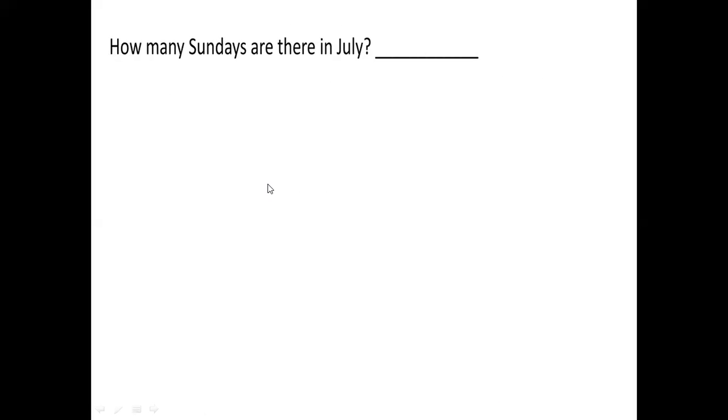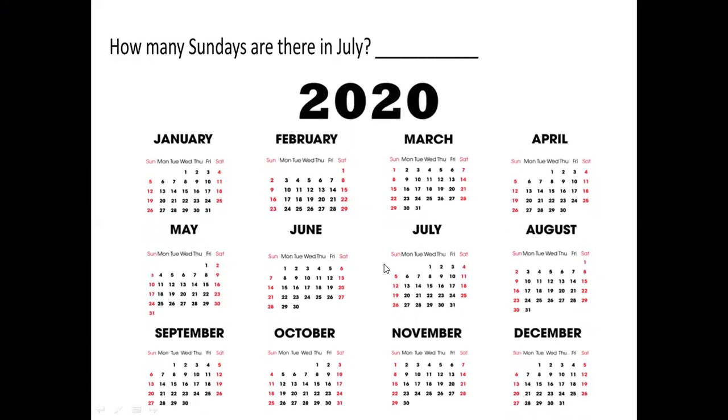Now, how many Sundays are there in July? Let's see our 2020 calendar. Where is July? Yes, it's here. So, how many Sundays are there? Let's count. Here, this is Sunday, Monday, Tuesday, Wednesday, Thursday, Friday, Saturday. Now, this Sunday, let's see how many Sundays are there? 1, 2, 3 and 4 Sundays. So, 4 Sundays are there in July.